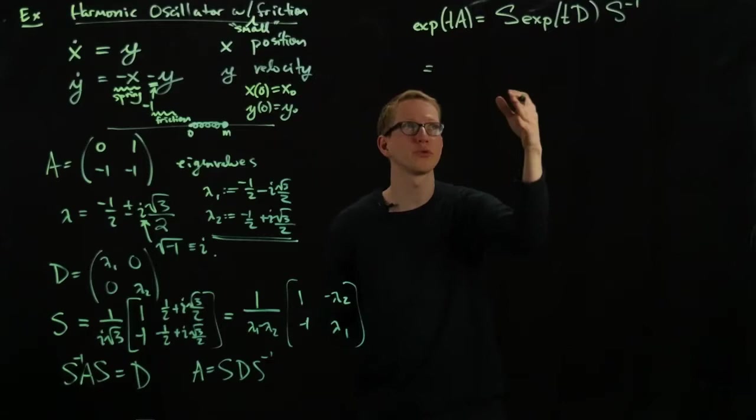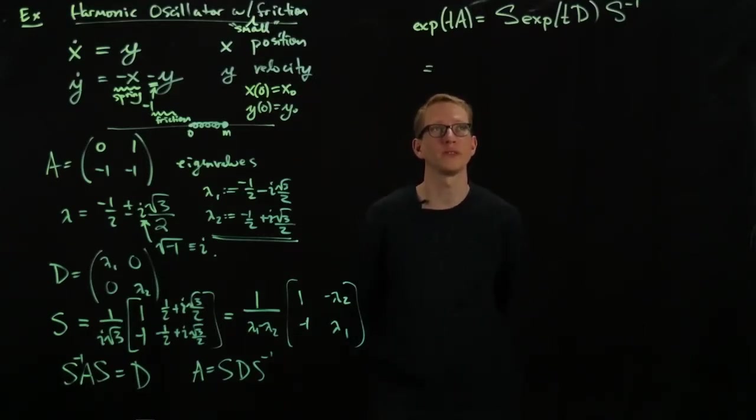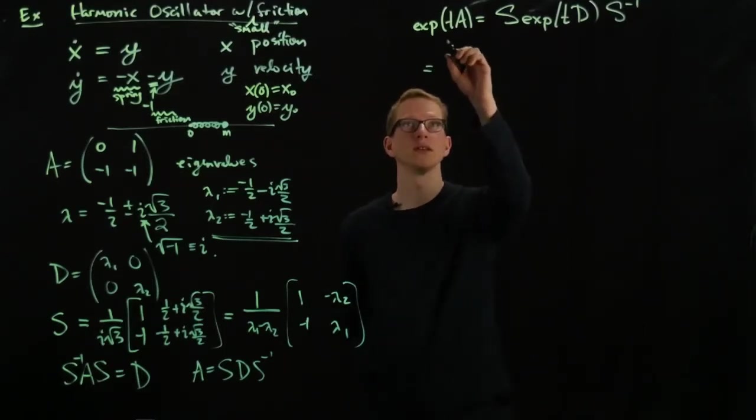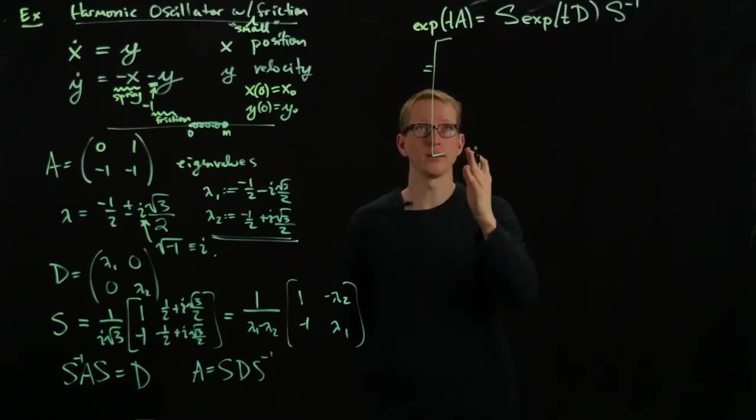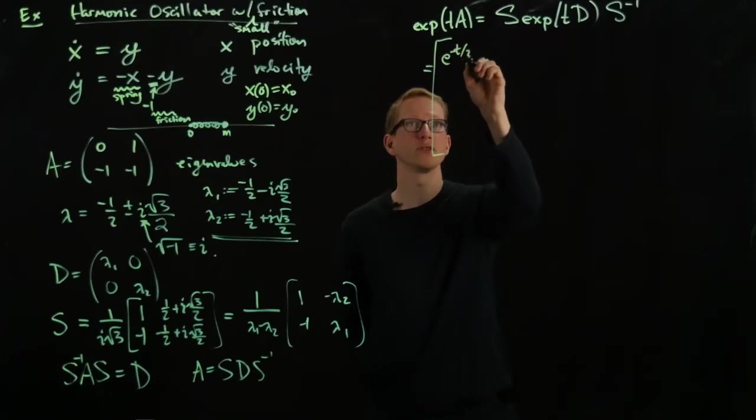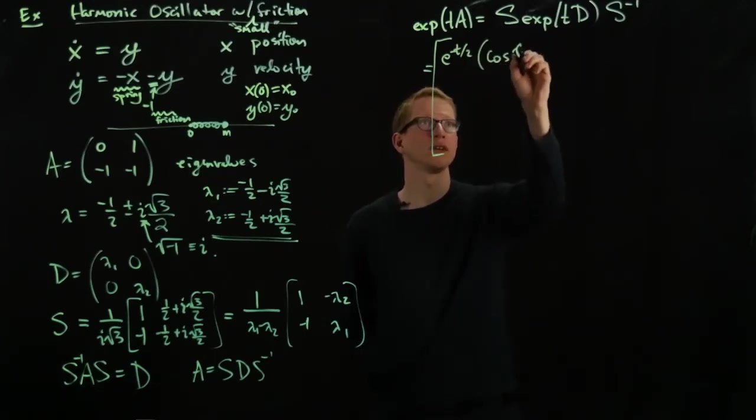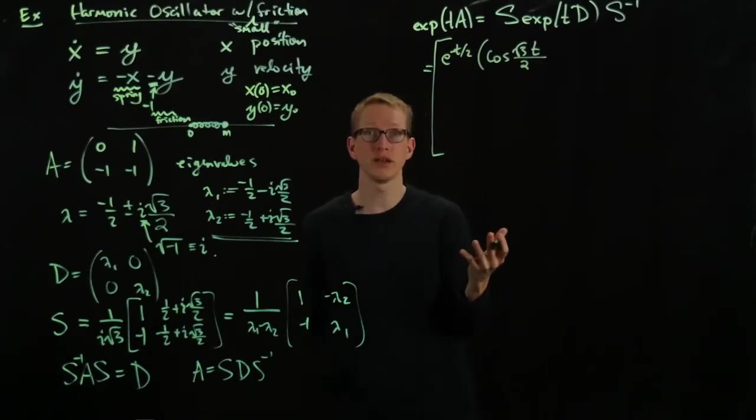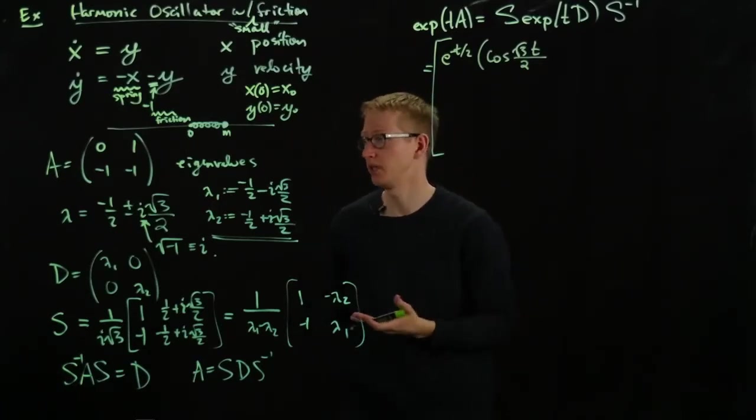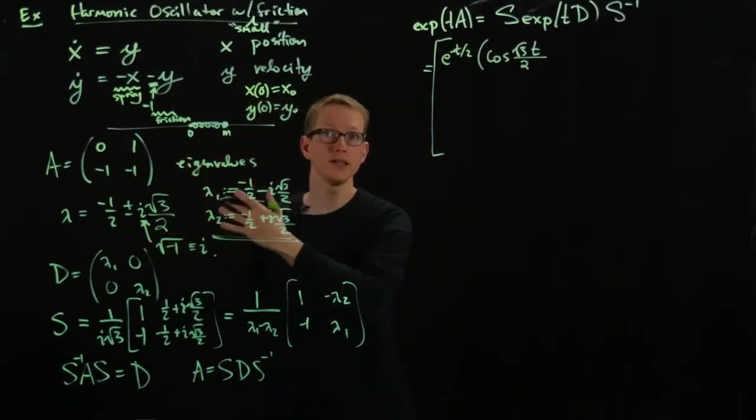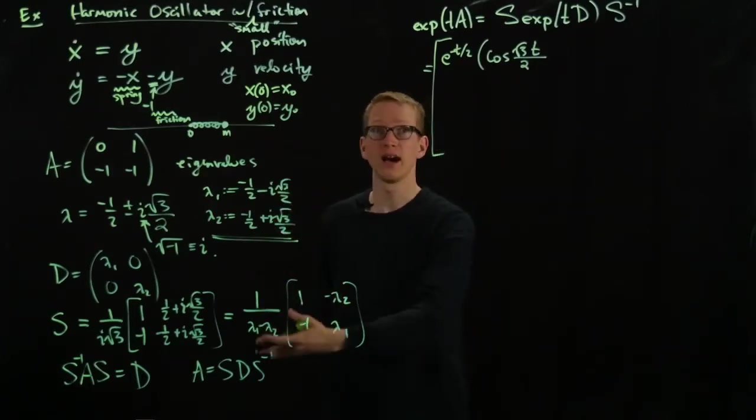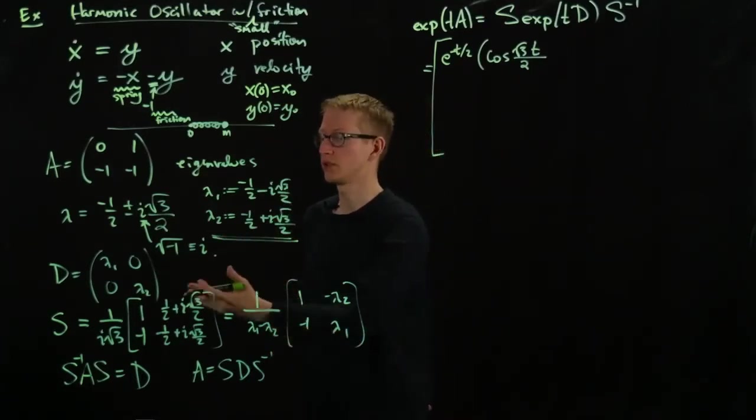And if you work out through all of these details, what you'll get is the following matrix. And I apologize for this because it's not so pretty. It's E to the minus T over 2 cosine square root of 3 T over 2. And by the way, we expect a matrix with real entries. I mean, we started out with real numbers.